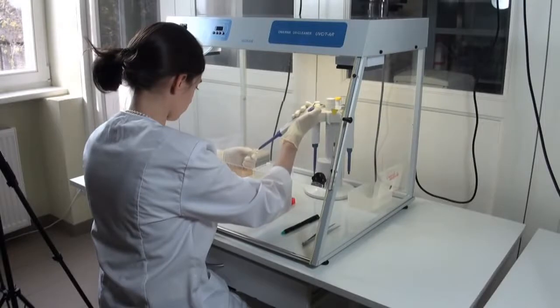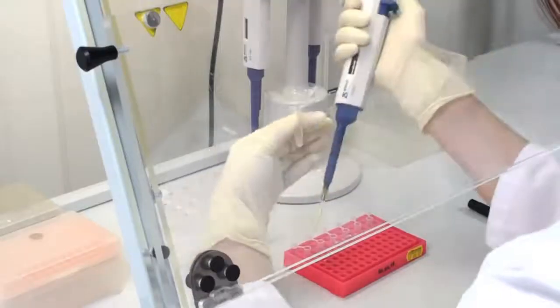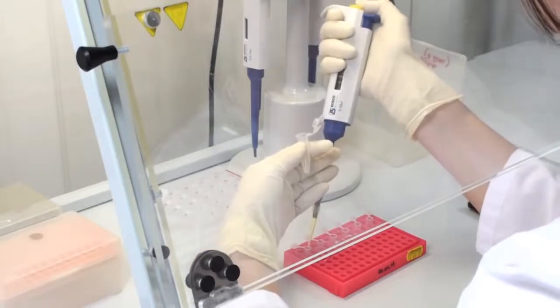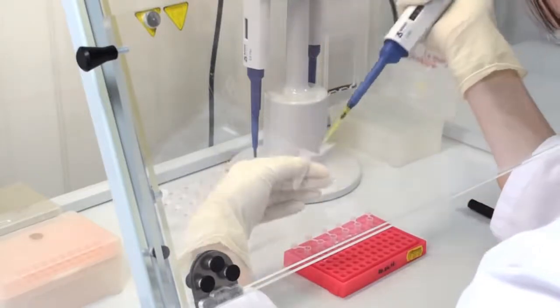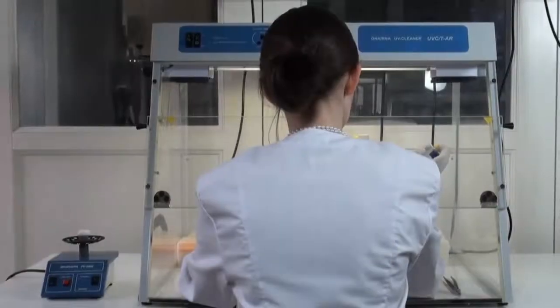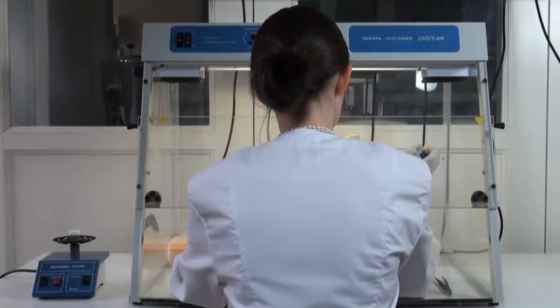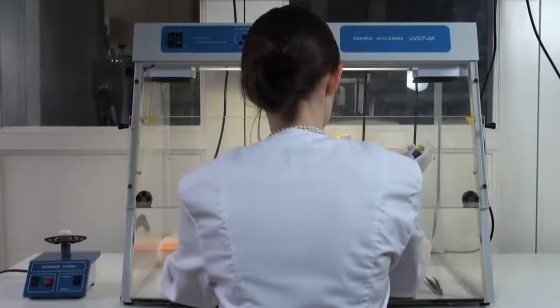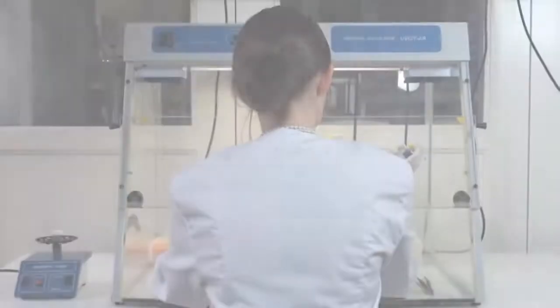UV Cabinets are designed for working with DNA and RNA samples by providing protection against contamination. All models are benchtop type, made of metal framework, glass or plexiglass walls, and working surfaces painted with powder enamel or made of stainless steel.